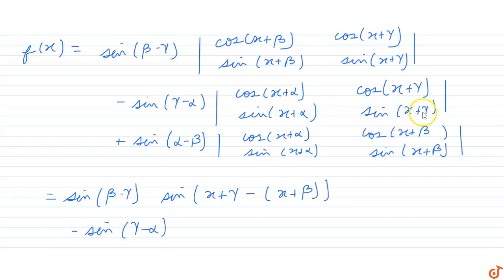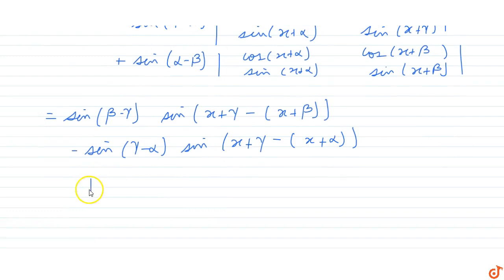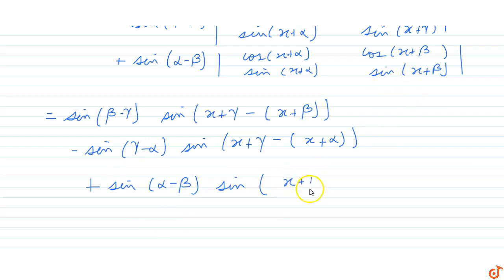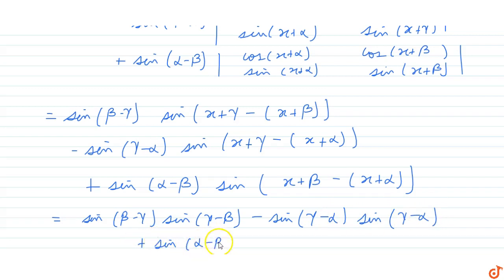Continuing, sine(x + alpha)·cos(x + alpha) minus sine(x + alpha)·cos(x + gamma) gives sine((x + gamma) minus (x + alpha)). The last term involves sine(alpha minus beta) into sine(beta minus alpha), plus sine(gamma minus alpha) plus sine(alpha minus beta) into sine(beta minus alpha).